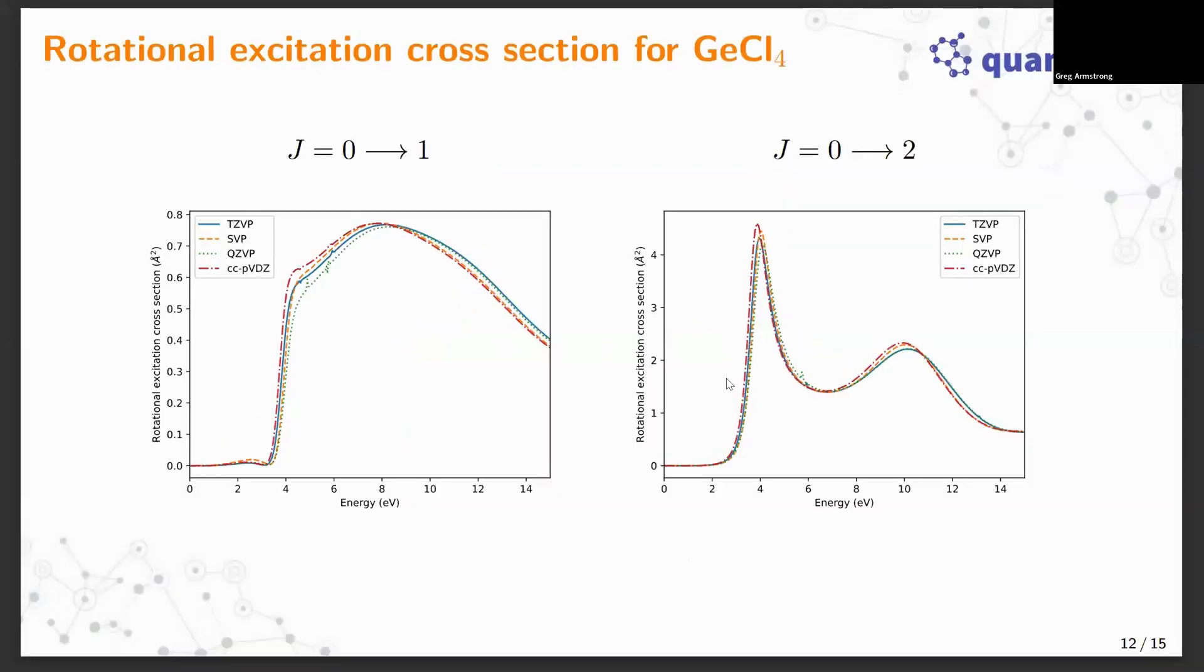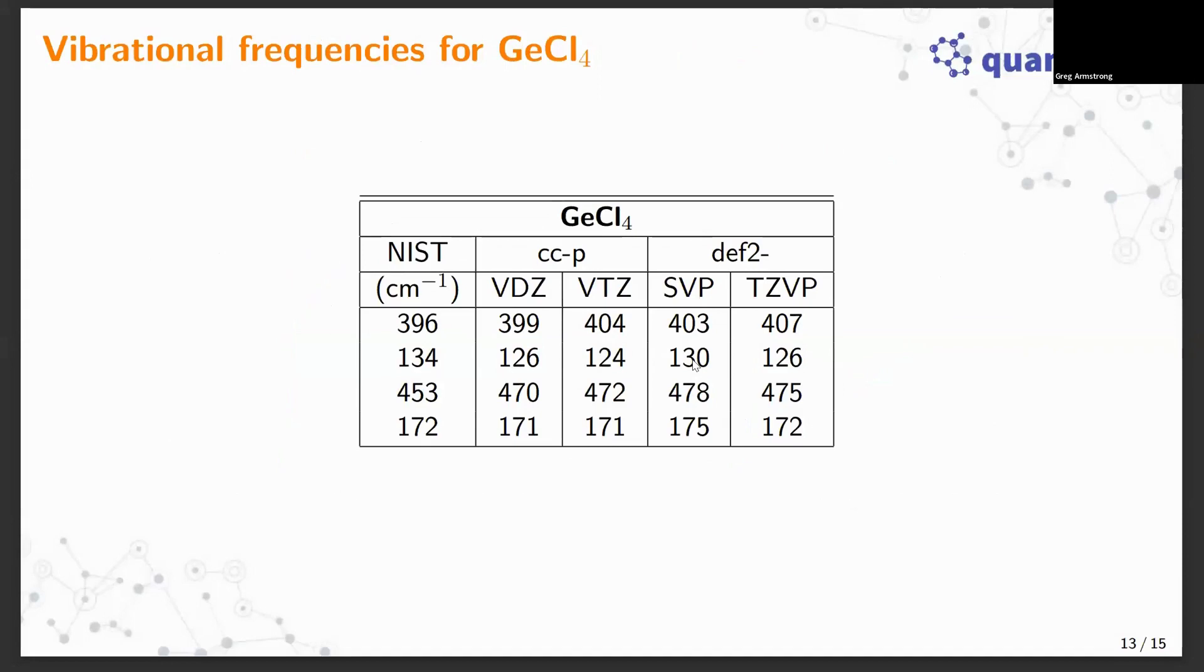Some rotational excitation cross sections show the same sort of thing - reasonable agreement in the overall shape, although at the higher end of energies there's similarity between the Dunning double-zeta basis set and the SVP result. Triple and quadruple zeta are somewhat different so there's some convergence still required there. But overall shapes of these two transitions, J=0 to 1 and 0 to 2, are very similar in all cases which builds confidence that there's no problem using these basis sets.